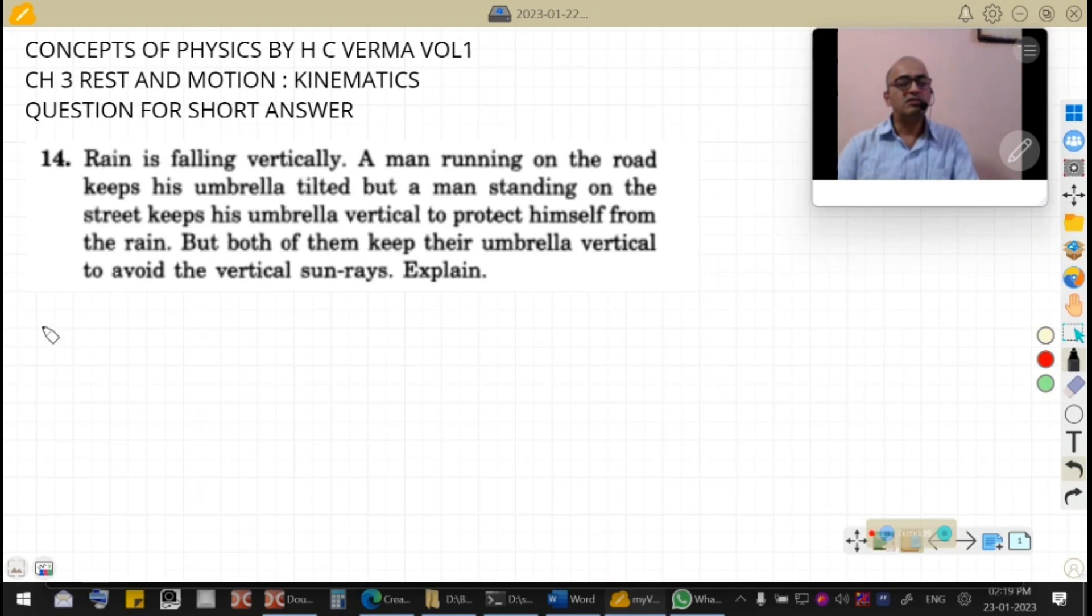So students, first of all we have to understand that rain has got a certain limited speed, that is, it may be coming at say 5 meters per second. This is the velocity of rain.